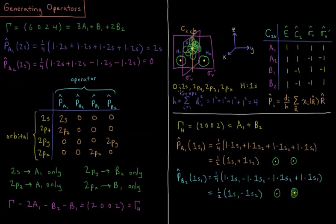The valence orbitals in question are the oxygen 2S, 2Pz, 2Py, and 2Px orbitals, and the 1S orbitals of hydrogen 1 and hydrogen 2.